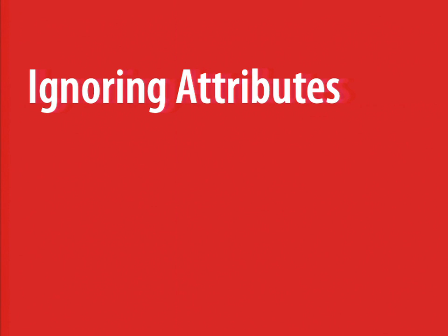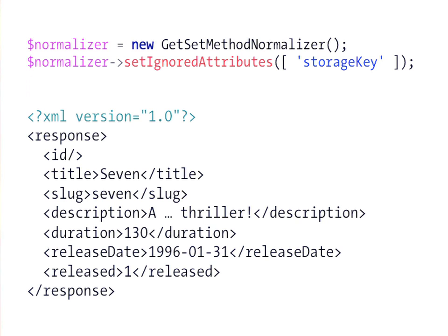Most of the time you don't want to serialize everything — you want to expose only some parts of your object. On any normalizer, you can use the setIgnoredAttributes method, passing an array of attributes to skip from normalization and serialization. For example, I don't want to expose the storage key as it's an internal property. After setting this, the storage key no longer appears in the JSON or XML output. This feature was introduced in Symfony 2.6.